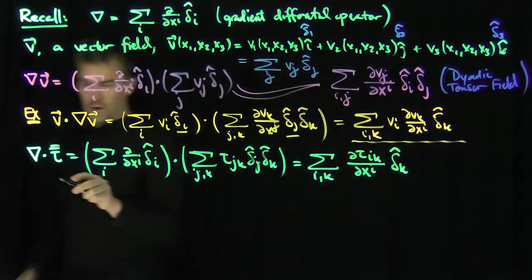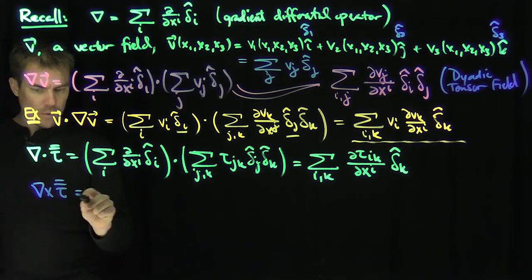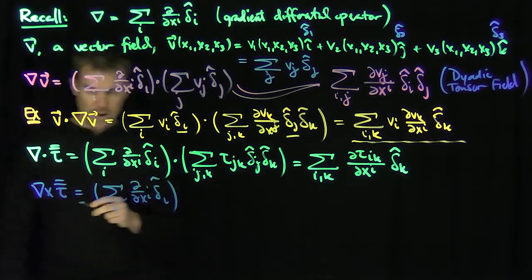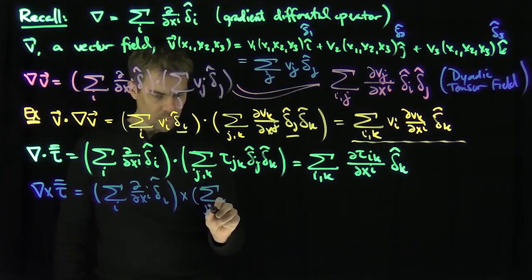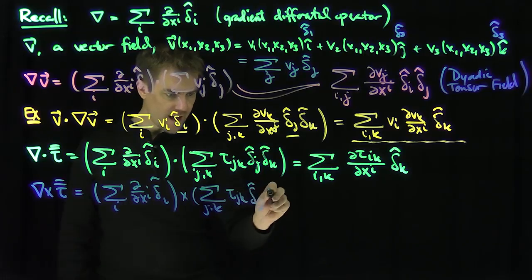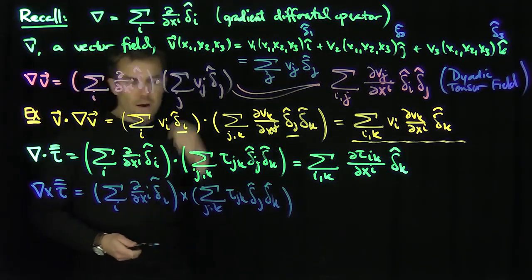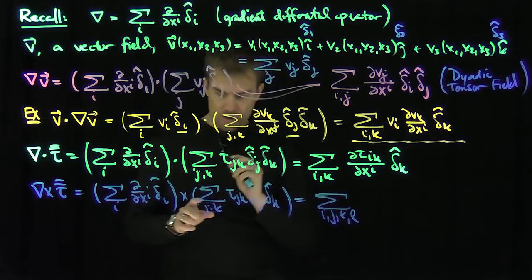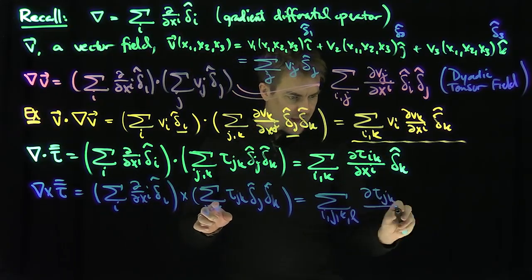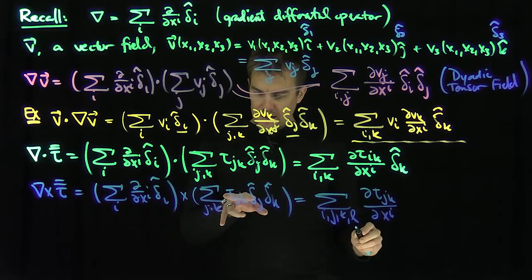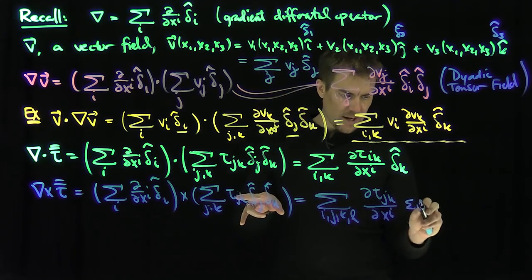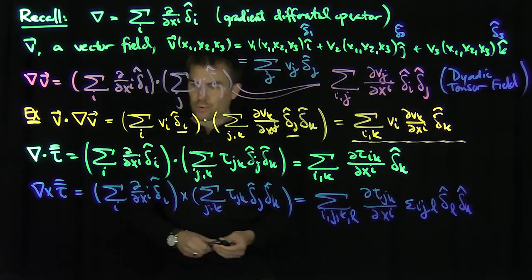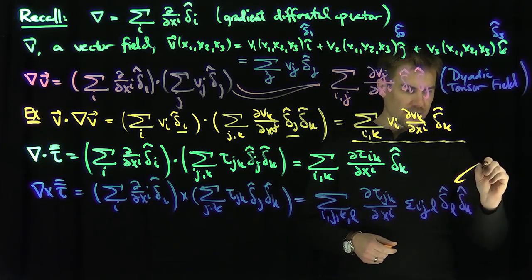What happens if we do the curl? The gradient curl tau bar bar would be the sum over i d by dxi delta i hat cross the sum over j and k tau jk delta j hat delta k hat. This becomes the sum over i, j, k, and l of d tau jk dxi, and delta i cross delta j gives epsilon ijl delta l hat delta k hat. So this is a dyadic tensor.